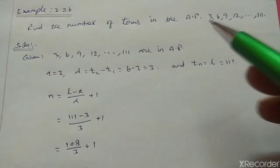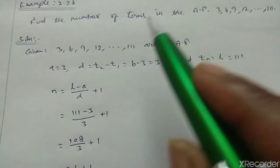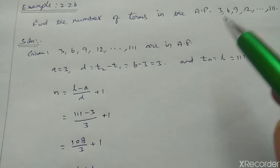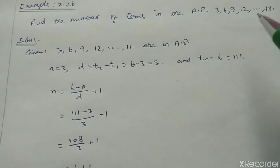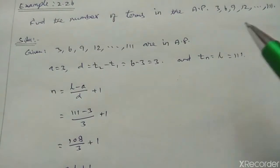Example 2.26. Find the number of terms in the AP: 3, 6, 9, 12, up to 111.